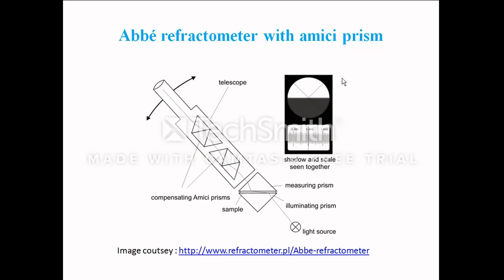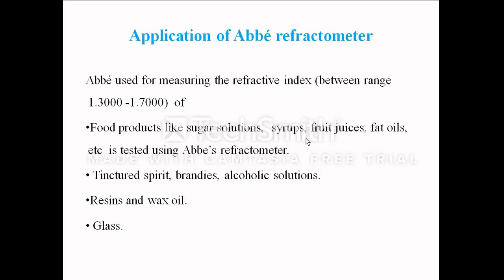After the dark and bright interface is adjusted at the center of the crosshair using the measuring eyepiece, the corresponding value of the refractive index can be measured by observing the position of the pointer over the attached scale. In this way, using Abbe's refractometer, we can measure the refractive index.